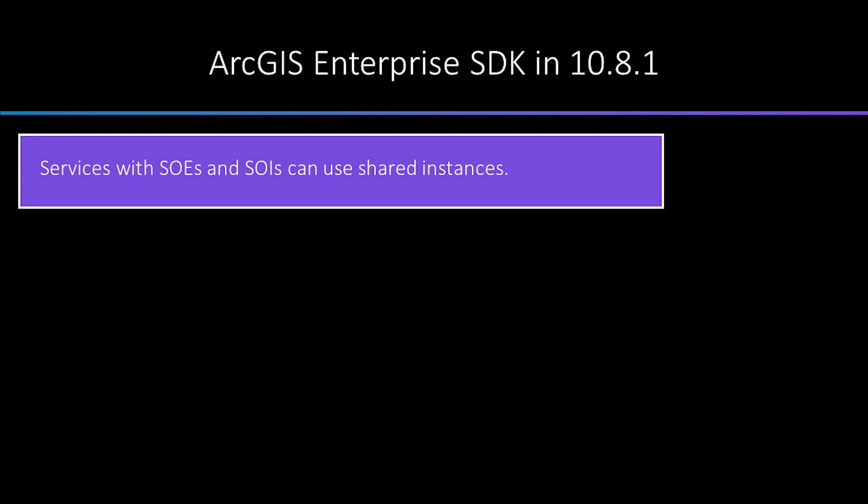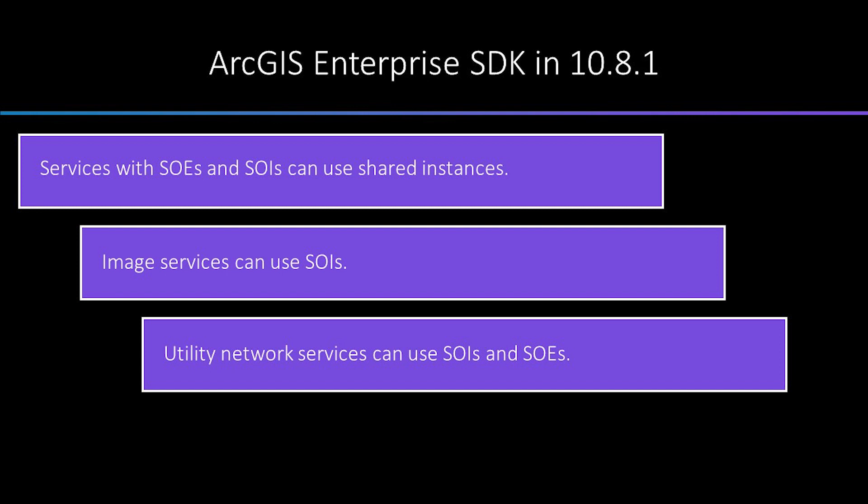There are a lot of great new features to the ArcGIS Enterprise SDK in 10.8.1. They make SOEs and SOIs easier to develop and allow them to work with more service capabilities. One of the first things you will notice is that services with SOEs and SOIs can now use shared instances, which can be found in the new support shared instances property. Other new capabilities include image service and utility network service support.